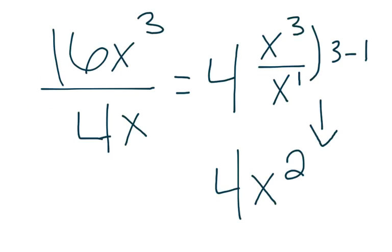You take 16 and divide it by 4, which is 4. Then you take x³ over x and subtract the exponents from each other, which is 3 minus 1. Your answer is 4x².